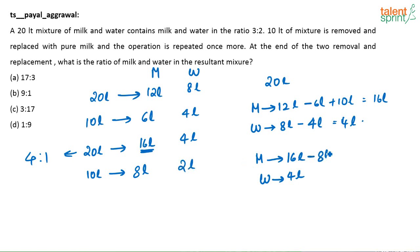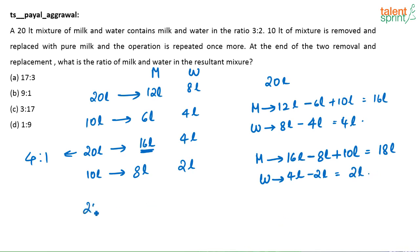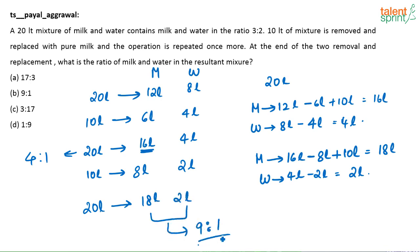I am removing 8 liters of milk and 2 liters of water, and then adding 10 liters of milk again. So milk becomes 16 − 8 + 10 = 18 liters, and water becomes 4 − 2 = 2 liters. The final amount of milk and water in the solution is 18 liters and 2 liters, which is in the ratio 9:1. Option B is your answer.